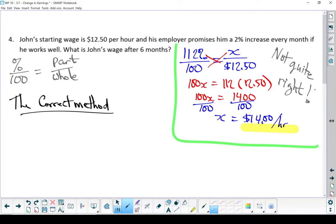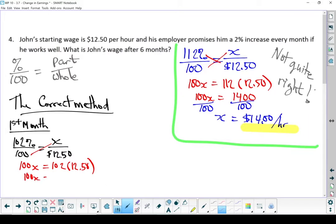The way to do this question correctly is you have to do each month and its raise separately. Keep in mind, each of these is only a 2% raise. So we're going to write it as 102% over 100. At the end of the first month, John's wage went up to $12.75 an hour. That's a 25 cent raise.